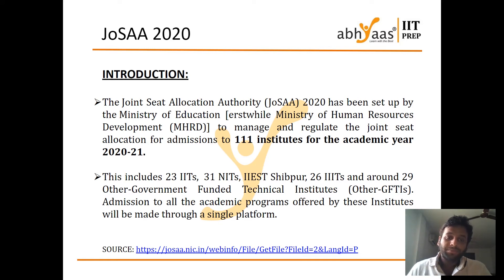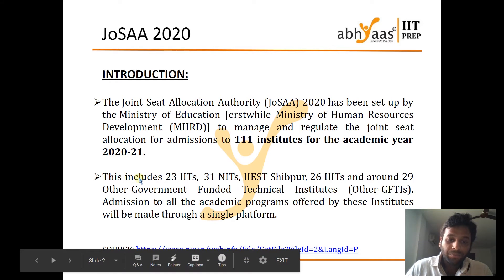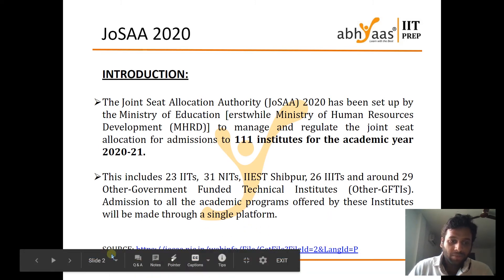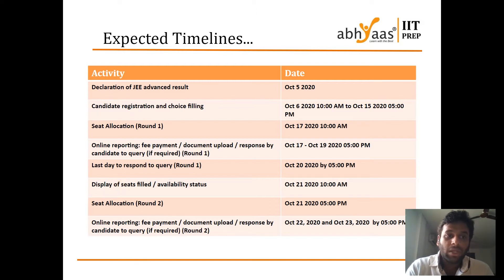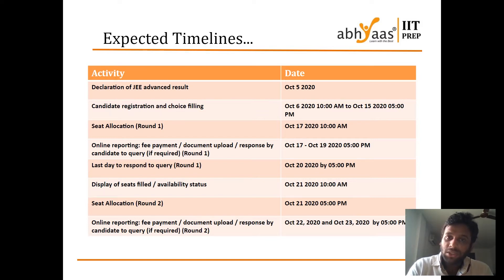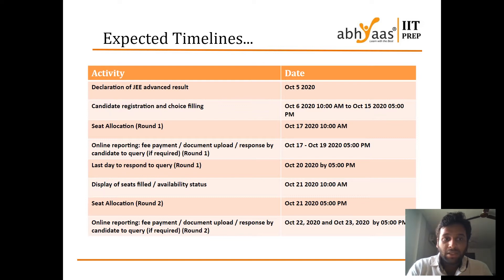Next, I will tell you about the expected timelines. Advanced result has been declared on October 5th, 2020, and then candidate registration and choice filling started on October 6th, 2020, 10 a.m. It is up to October 15th, and then seat allocation will be there from October 17th for Round 1. Before that, you have mock allocation 1 and mock allocation 2, so that you will be used to the portal and how to fill choices.